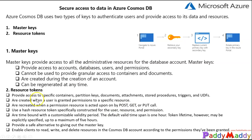The other type of token is resource tokens. Resource tokens provide access to application resources within your database — things like containers, documents, attachments, stored procedures, triggers, and UDFs. You can use resource tokens by creating Cosmos DB users and permissions.